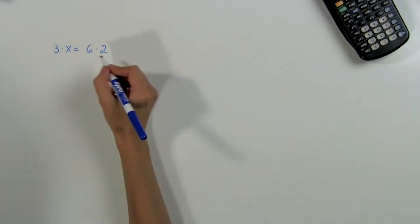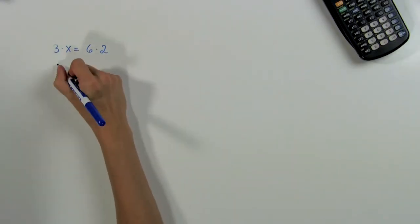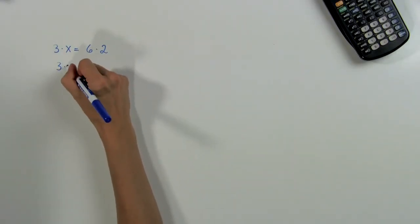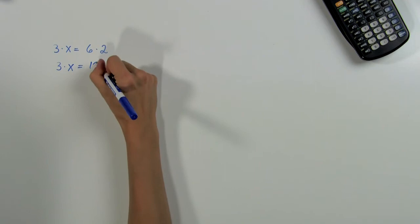So first let's begin by multiplying the right side. 6 times 2 is 12, so we get 3 times x is equal to 12. Now we can use the division property of equations to get rid of the 3. The division property states that as long as we divide both sides of the equation by the same number, the two sides will remain equal.